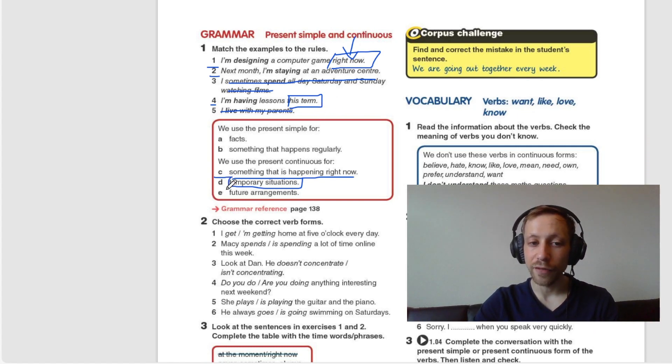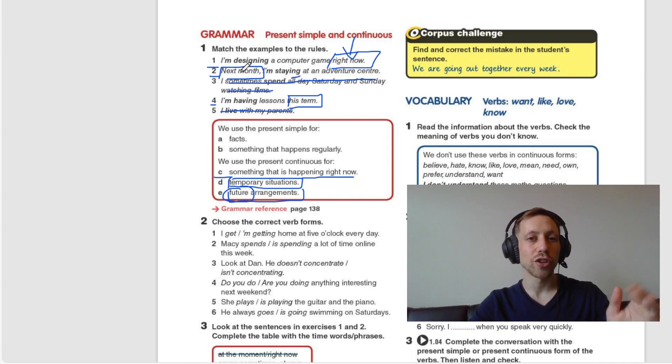Let's look at future arrangements. That is number two, next month. Next month, I'm staying at an adventure center. We have ing and we have in the future is next month. This is how we can use the Present Continuous for the future.